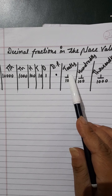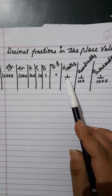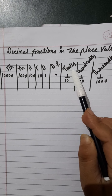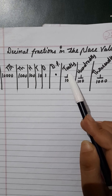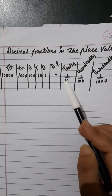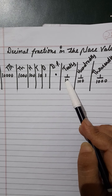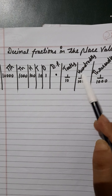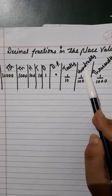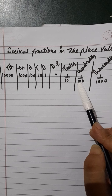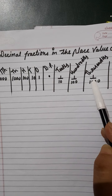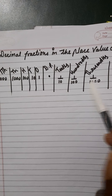After the decimal, the one is one tenth, because the place value of one is tenths. It means one — the part of one is tenth, means one ka one tenth. And the next is hundredths — it is not hundred, it is hundredths, so one out of hundredths. And thousandths — it is one out of thousandths.